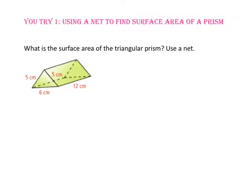Pause the video and do you try number one. What is the surface area of the triangular prism? Use a net. Let's start by drawing the net. We have one rectangle with base six and height 12, a second rectangle with base five and height 12, and a third rectangle with base five and height 12. We also have two triangular bases with base six and a height that we'll need to find.